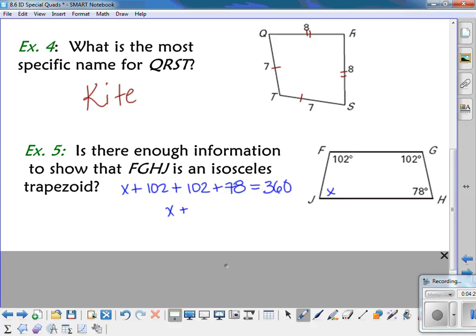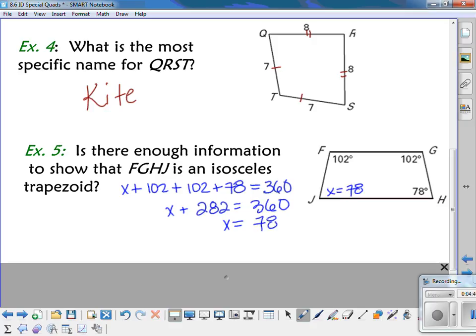Combine my like terms, I get X plus 282 is equal to 360. And so, X equals 78. And since X equals 78, that means that both pairs of base angles are congruent. So, yes, there's enough information because both pairs of base angles are congruent.